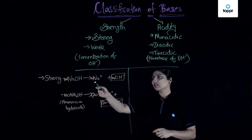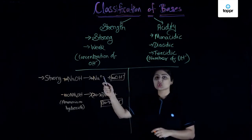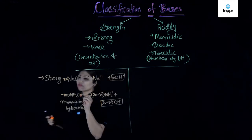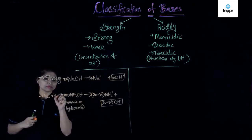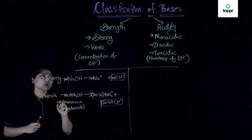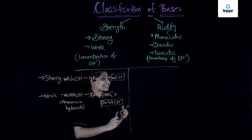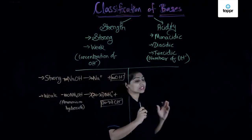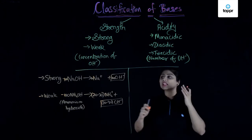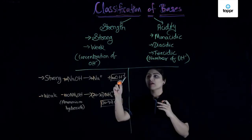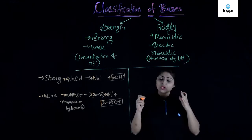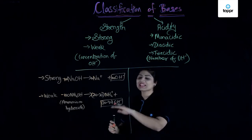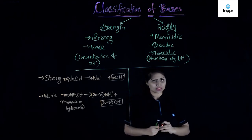We say that NaOH is a strong base whereas NH4OH is a weak base. A strong base will dissociate completely and give a greater number of hydroxyl ions, whereas a weak base will not dissociate completely and will give fewer hydroxyl ions.